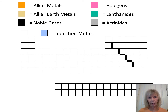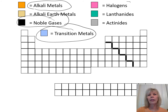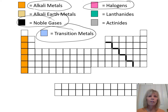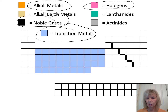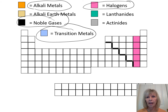A blank periodic table is used here to test whether you can identify the column names. The ones to know are: alkali metals (column 1), noble gases (last column, main group 8), transition metals (center), and halogens (main group column 7, in pink). You don't need to remember alkaline earth metals, lanthanides, or actinides.